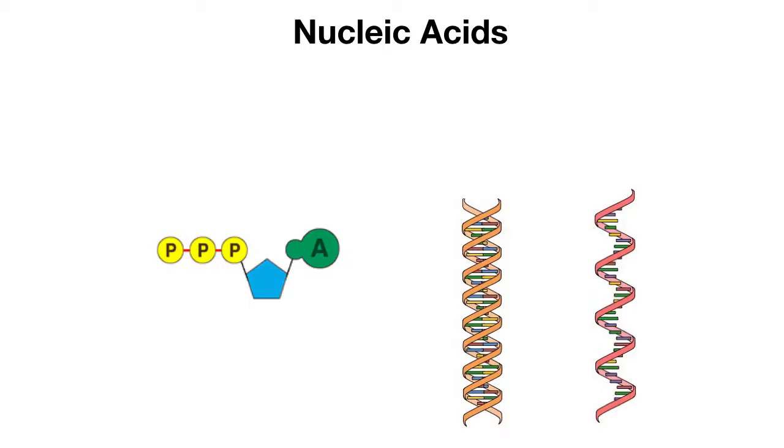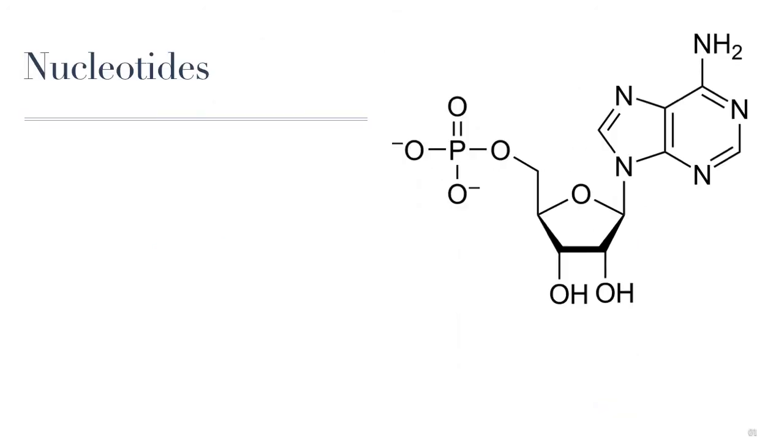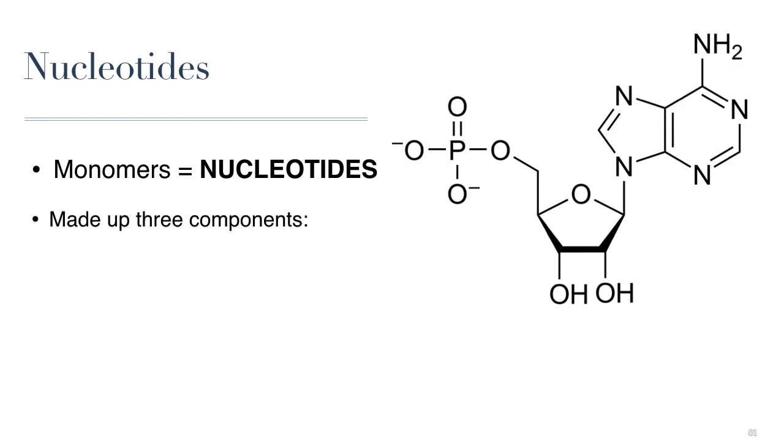There are two general categories or roles that nucleic acids play in our cells: one is bioenergetics and the other is in the storage and transmission of genetic information. We will focus on the basic structure of nucleic acids by looking at the monomers that make up nucleic acids, and the monomers of nucleic acids are structures called nucleotides.